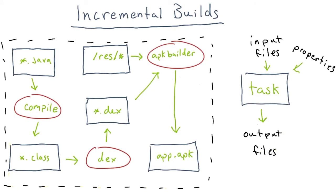If the inputs match, Gradle then also checks the outputs. If the outputs haven't been messed with since the last time the task ran, then the task can be skipped. If the outputs have changed or are missing, then the task must run again. When Gradle determines that no work needs to be done and the task can be skipped, the task is said to be up to date.